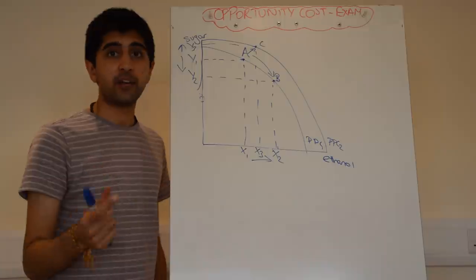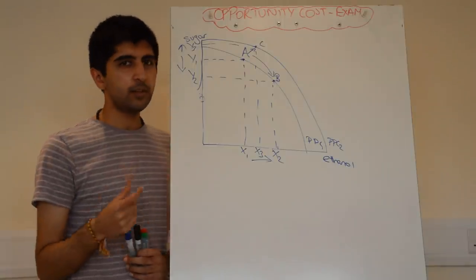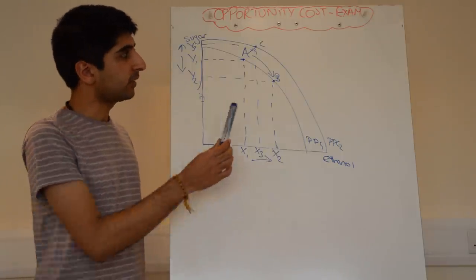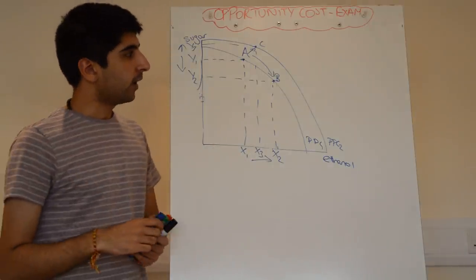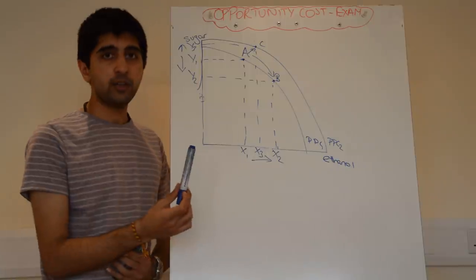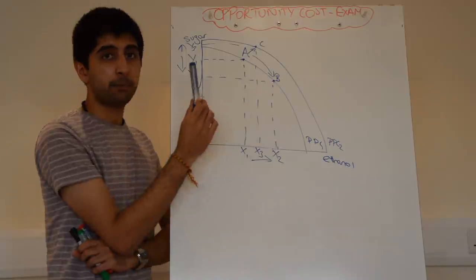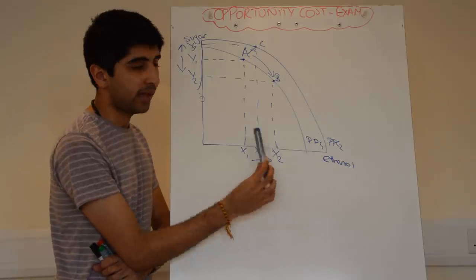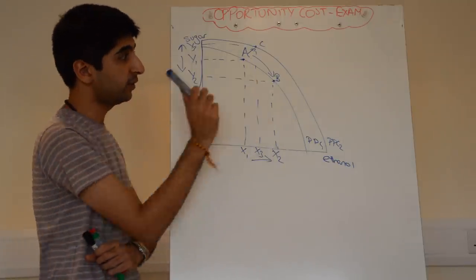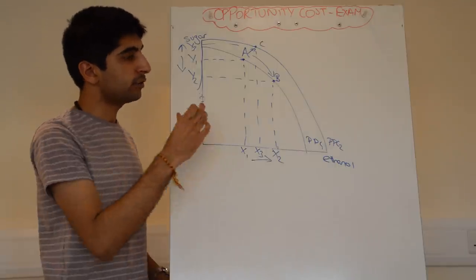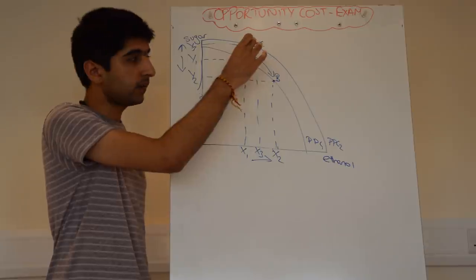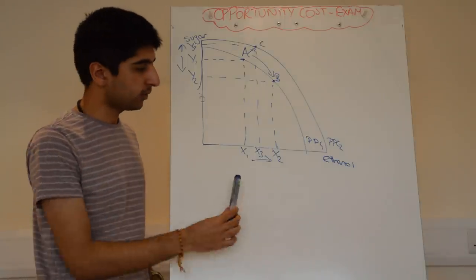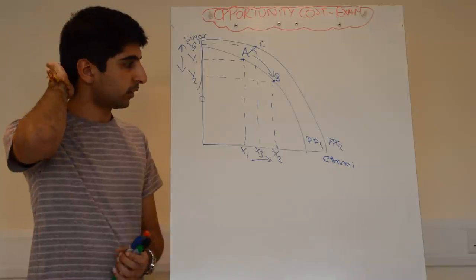Now, the two marks for the explanation are very important. One mark is very easy, the other is not so easy. The first mark: all you need to say is that the firm — so we're moving along the curve — has decided to increase the level of ethanol production by moving along the PPC curve from point A to point B. By doing so, the level of ethanol production has increased from X1 to X2 — one mark for that. Or if you've shifted the curve: the firm has now changed production from point A to point C, now producing on a new PPC curve PPC2, and by doing so the level of ethanol production has increased from X1 to X3 — one mark for that regardless.